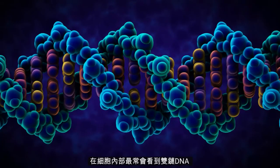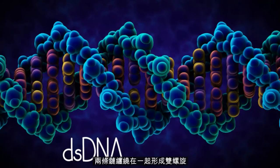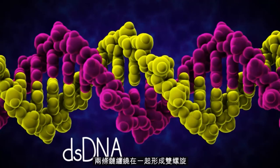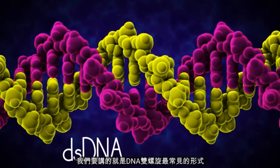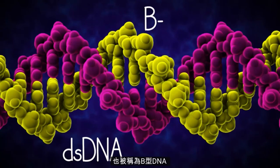Inside the cell, you will most commonly find double-stranded DNA, in which two strands intertwine to form a double helix. The most common form of the DNA double helix, which is what we will discuss here, is also called B-form DNA.